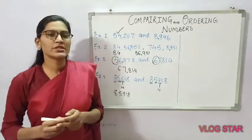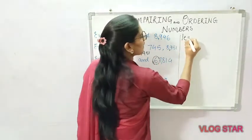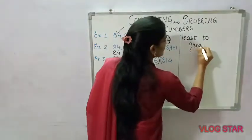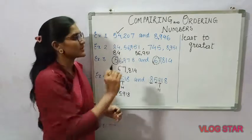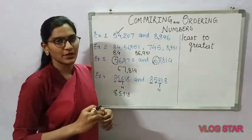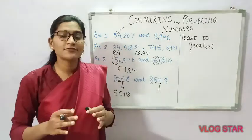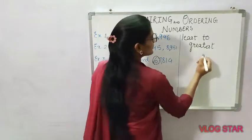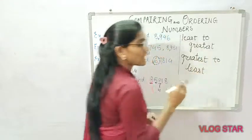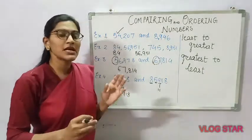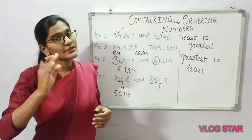So students, this is all about comparing and ordering numbers. Sometimes in exams you are asked to arrange numbers from least to greatest or greatest to least. Least to greatest means you arrange from the smallest to the biggest number — that is ascending order. Greatest to least means you arrange from the biggest down — that is descending order.